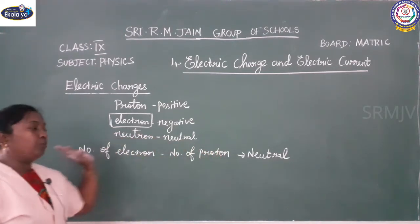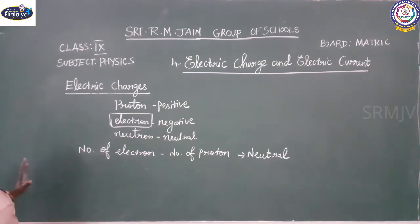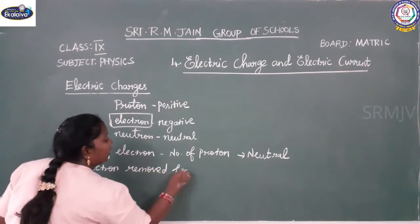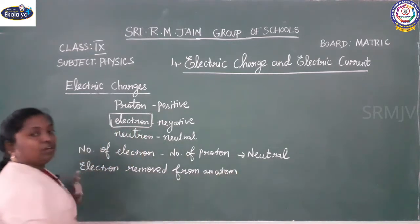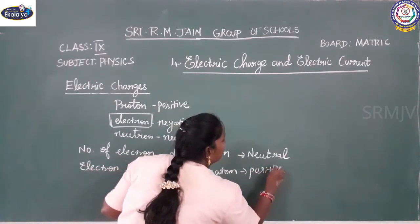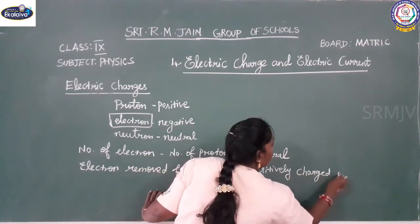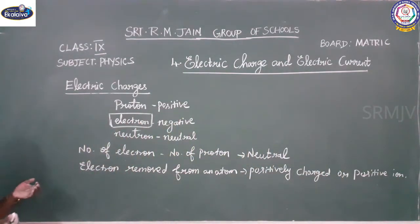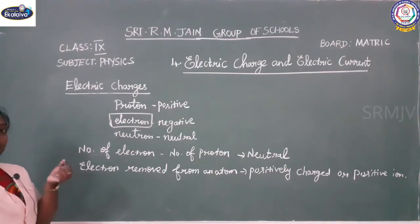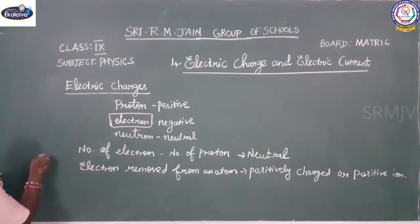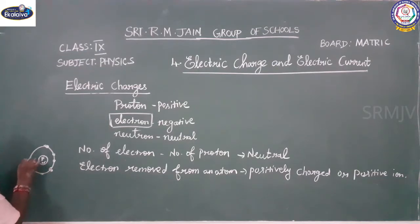When the number of protons and the number of electrons are equal, the atom becomes neutral. When will it become a positive charge? When one or two electrons are removed from the atom, it will become a positively charged atom, or a positive ion. For example, sodium has 11 electrons — when you remove the outermost electron, that atom becomes a positive ion.